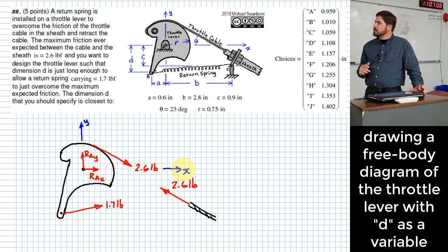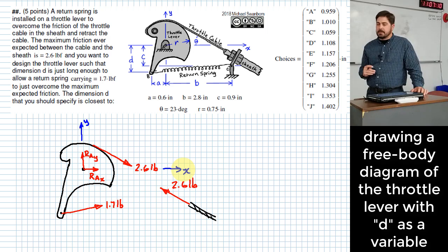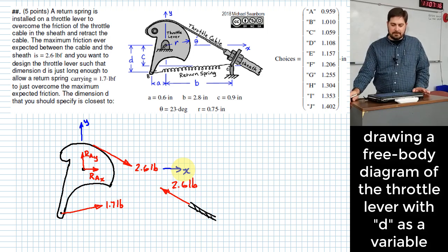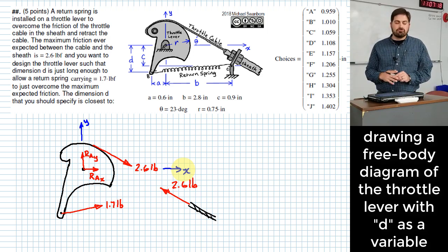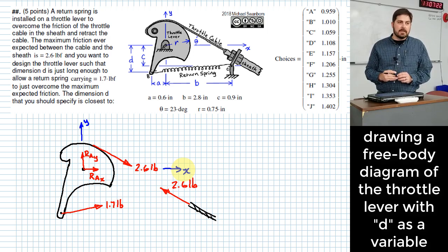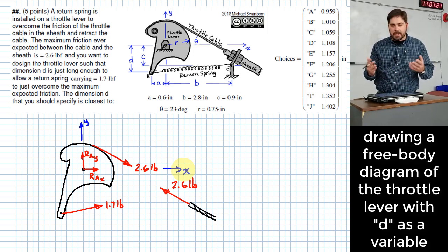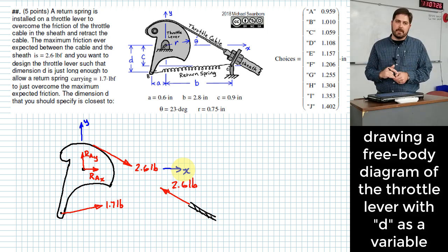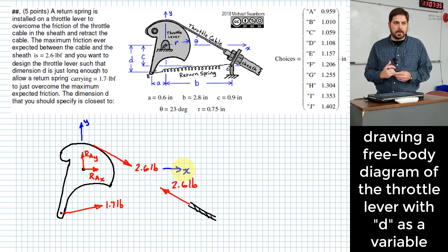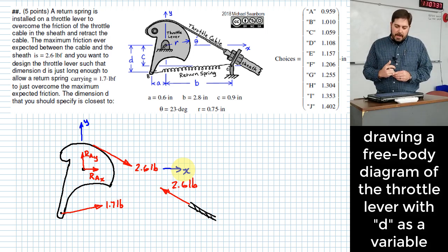Alright. So that's pretty good so far. Any other forces that we should consider being applied to the throttle lever? Anything? Should we do self-weight? What's our guideline for thinking about self-weight? If it doesn't give you any information about what it might be, then you can pretty much safely ignore it when it comes to doing exam problems.